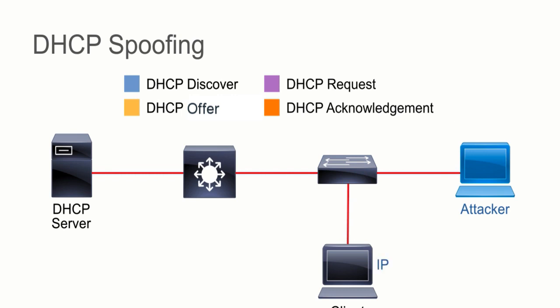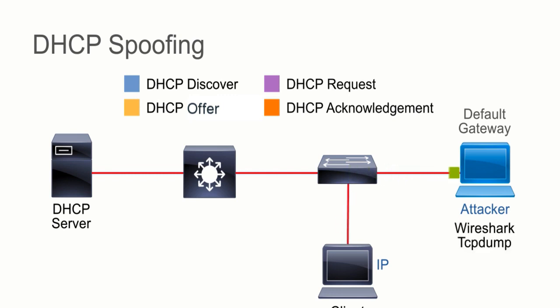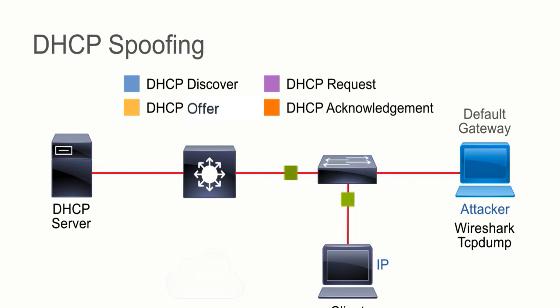Now the client has an IP that's not really part of our IP subnet. Well, who's his default gateway? You guessed it — it's this attacker right here. So now what happens? The client sends traffic to the gateway, it goes to the attacker. The attacker is using Wireshark or TCP dump or whatever other application to capture those packets and store them. But at the same time, he forwards that onto his default gateway, who can then forward that traffic out to the internet or wherever else it may be going.